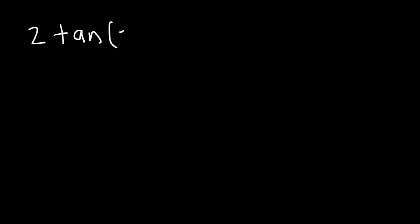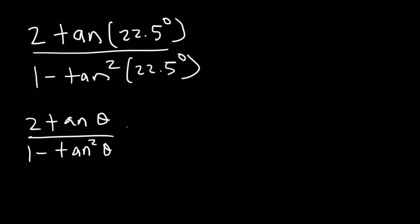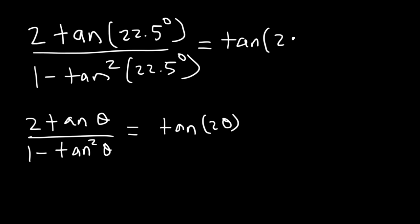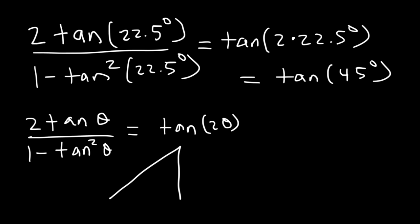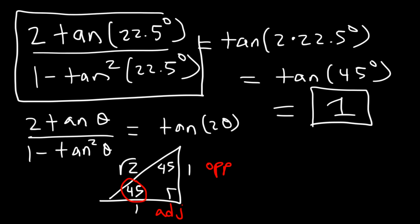What is the value of 2 tan 22.5° / (1 − tan² 22.5°)? We can recognize the double angle formula for tangent: 2 tan θ / (1 − tan² θ) = tan 2θ. So this expression equals tan(2 × 22.5°) = tan 45°. Using the 45-45-90 triangle, tangent 45° = opposite/adjacent = 1/1 = 1. So the entire expression has an exact value of 1.